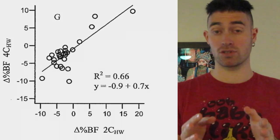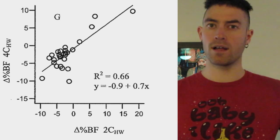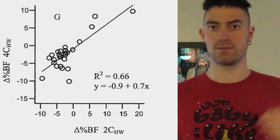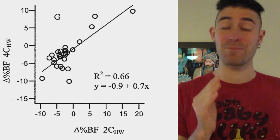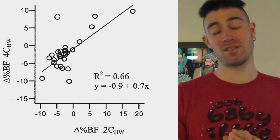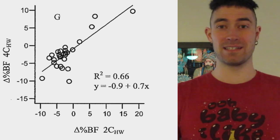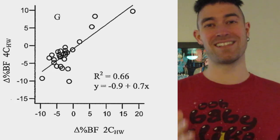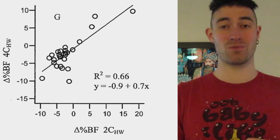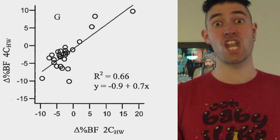Looking at a graph of how accurate this can be: on average, hydrostatic weighing is more accurate than Bod Pod. Comparing two-component hydrostatic weighing versus a four-component model — in one example, a person showed a 10% loss in fat. What did hydrostatic weighing show? Zero percent. They lost 10% fat, but hydrostatic weighing told them they lost nothing.